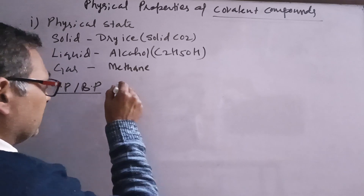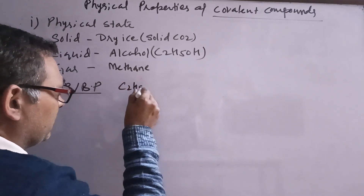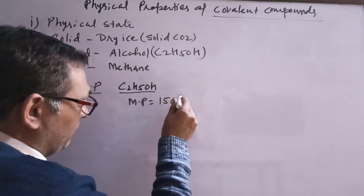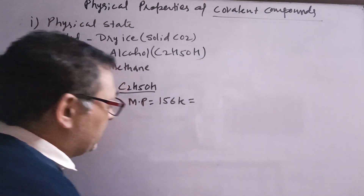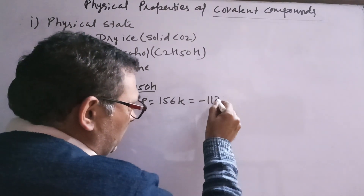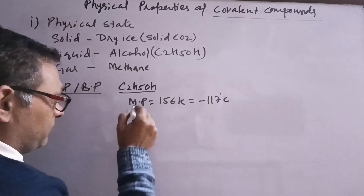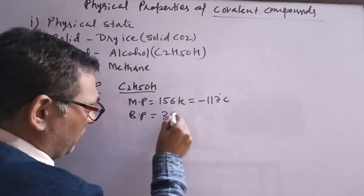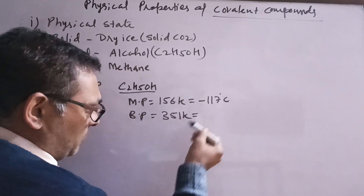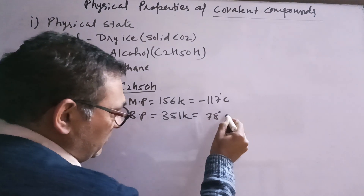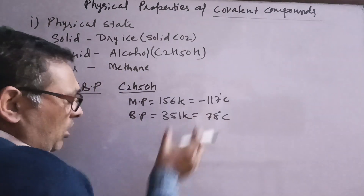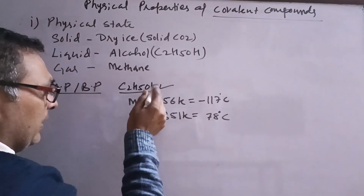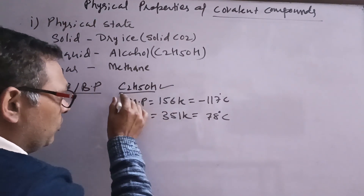Some examples: for alcohol, the melting point is 156 Kelvin, which is minus 117 degrees Celsius. The boiling point is 351 Kelvin, or 78 degrees Celsius. There are very low melting and boiling points because alcohol is already found in liquid state at room temperature.